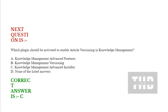Next question: Which plugin should be activated to enable article versioning in Knowledge Management? Option A: Knowledge Management Advanced Features. Option B: Knowledge Management Versioning. Option C: Knowledge Management Advanced Installer. Option D: None of the listed answers. Correct answer is Option C.